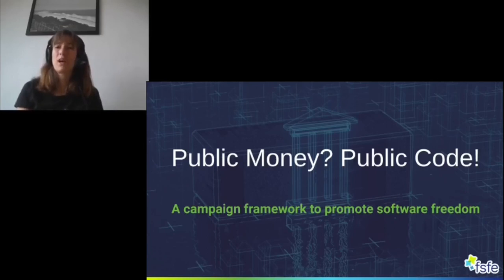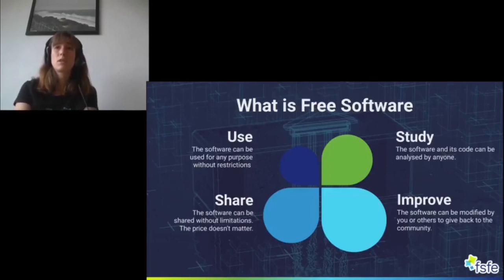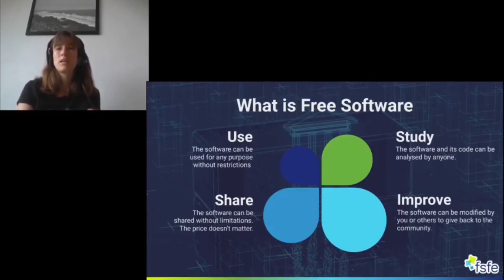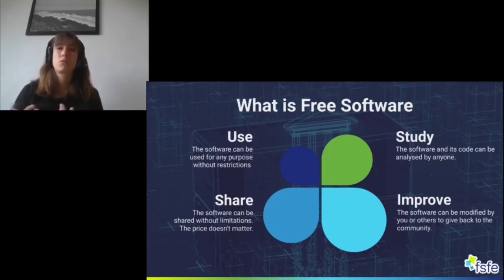First of all I will begin with what is free software, as this is one of the basics. Free software means software that is published under a free and open source software license. Every free and open source software license includes the four freedoms, and there are many free and open source software licenses out there, but the important thing is that all of those have granted the four freedoms.